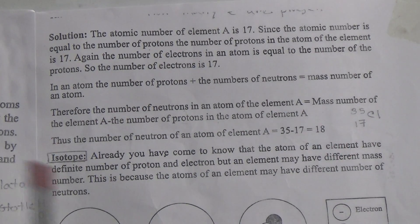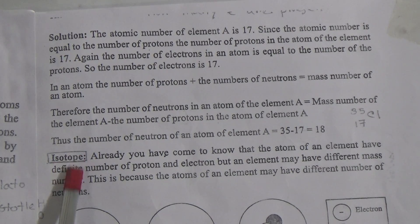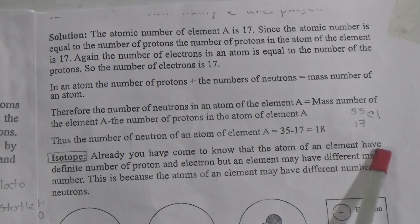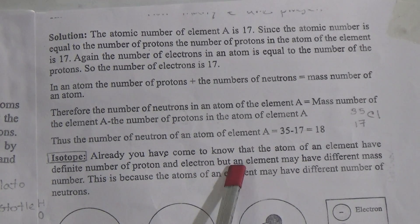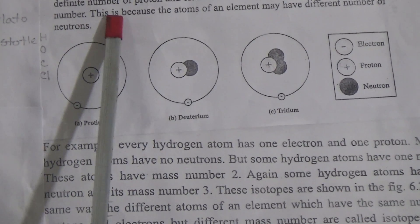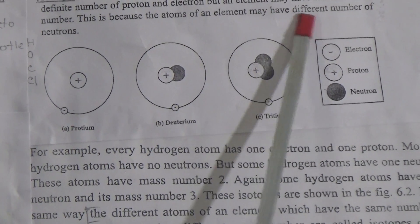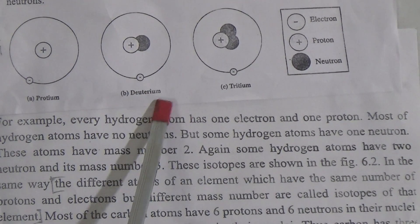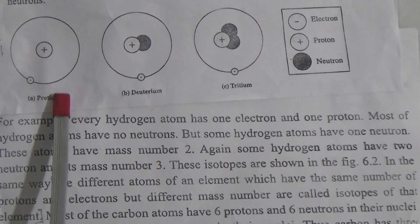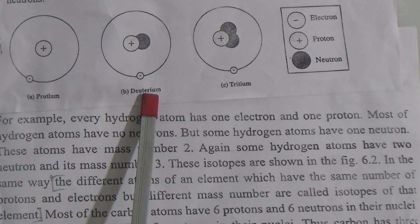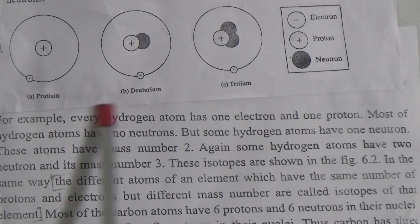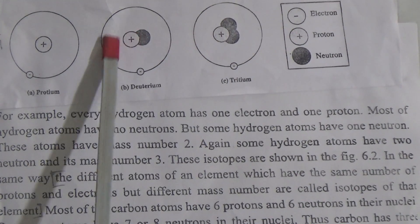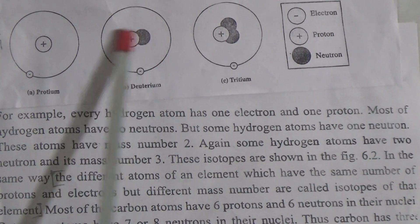Now, dear students, we will go to the last part of the lesson — isotopes. You have come to know that the atom of an element has a definite number of protons and electrons, but an element may have different mass numbers. This is because atoms of an element may have different numbers of neutrons. These are the different isotopes of hydrogen: the first is protium, then there is deuterium, and then tritium. All of these are the isotopes of hydrogen. In the deuterium atom, there is 1 neutron.